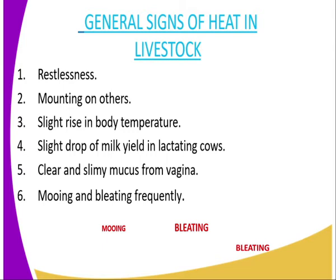You find that the female normally mounts on others when it is on heat. Then the third sign is a slight rise in body temperature. Then number four, a slight drop in milk yield in lactating animals — those animals which are being milked, you find there is a slight drop in milk production levels.